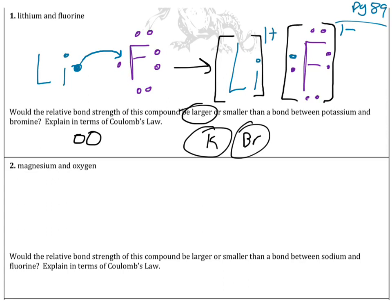Since potassium and bromide are larger atoms, the relative bond strength of lithium and fluorine is going to be larger. The reason why is because the distance between the larger atoms is greater, so the smaller atoms are able to get closer together, and the force of attraction between them is greater.